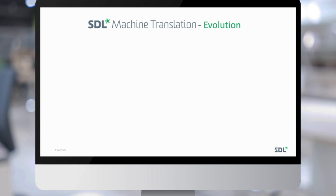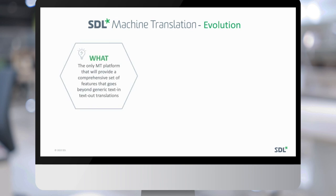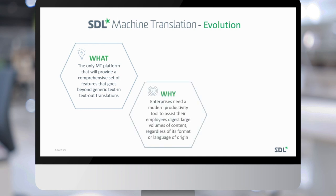In a nutshell, what is this machine translation evolution path? Our ambition is to be the only MT platform that provides a comprehensive set of features going beyond generic text-in, text-out translation. We've recognized that enterprises need a more modern productivity tool to assist employees in digesting the large volume of content that is exploding — where the time to consume and find the right piece of content for day-to-day jobs is becoming increasingly difficult. We want to bring a tool that helps you more quickly get to the most critical piece of content, regardless of its format and regardless of the language of origin.